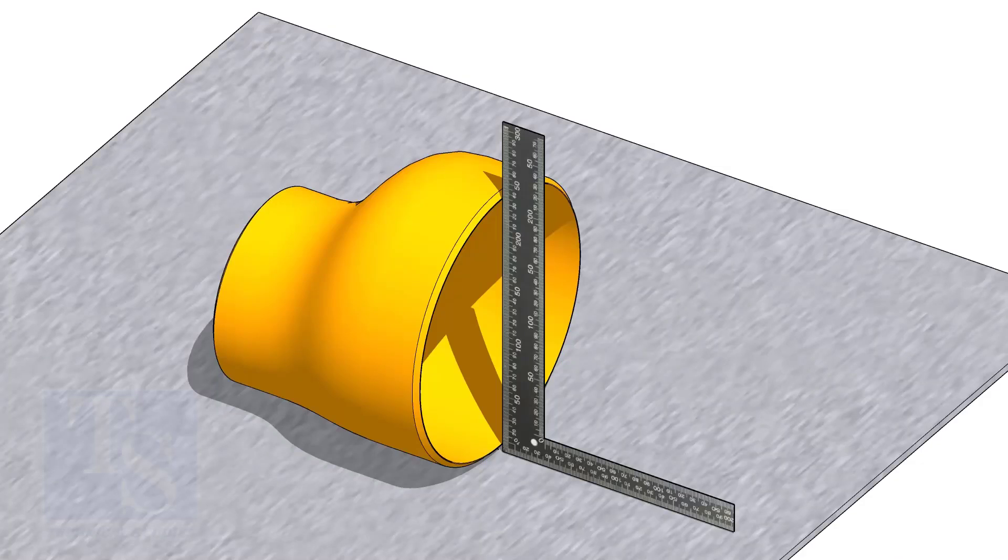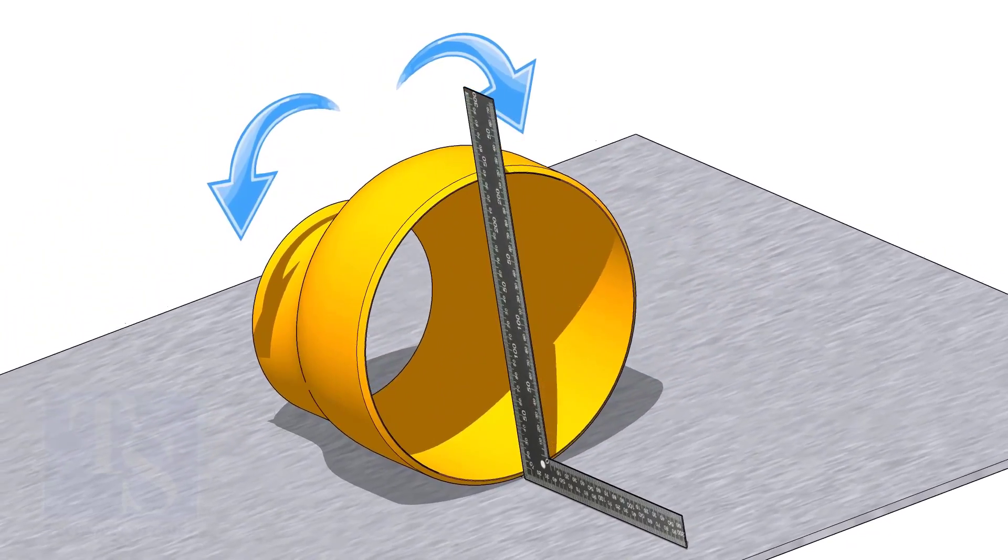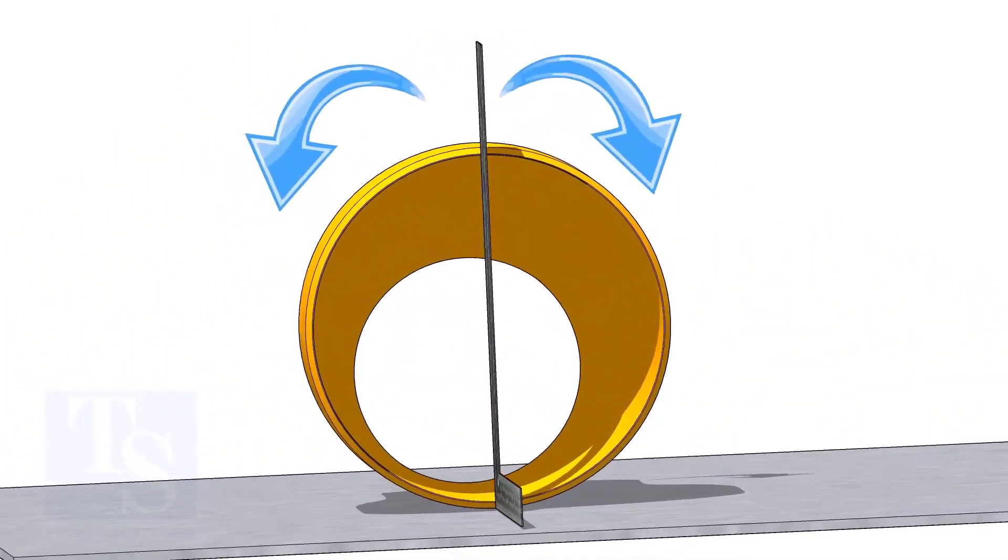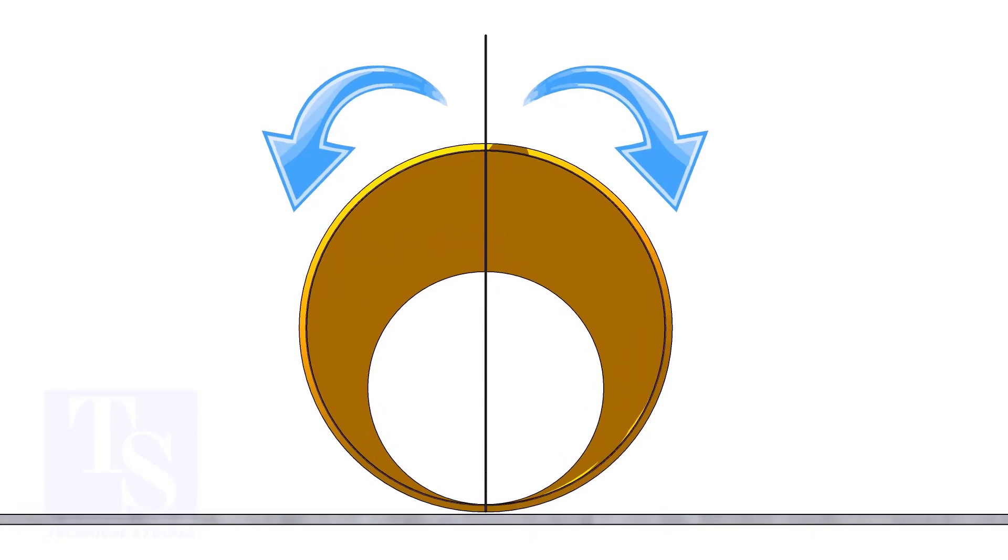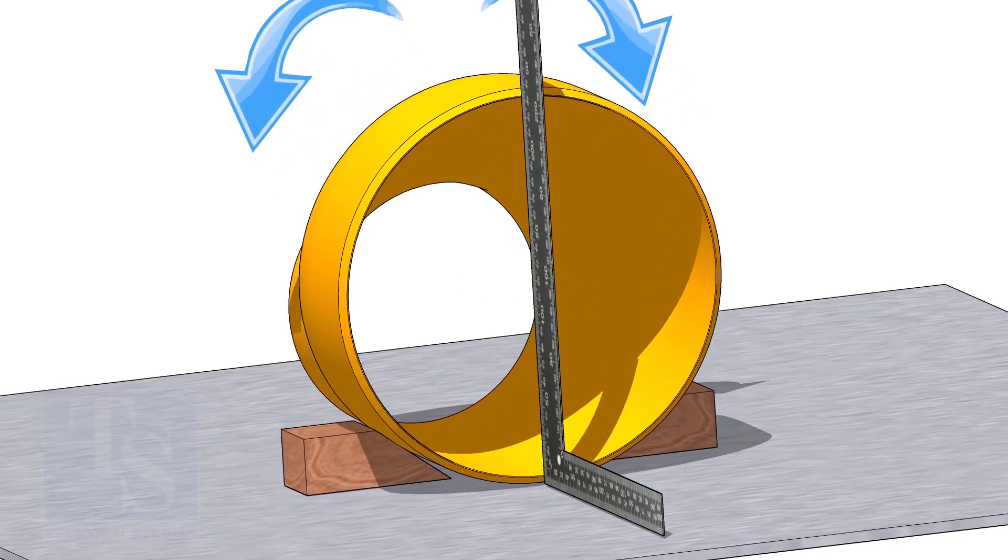Put the reducer on a straight plate. Hold a right angle at the large side of the reducer and gently rotate the reducer back and forth until the face of the reducer is square to the right angle.